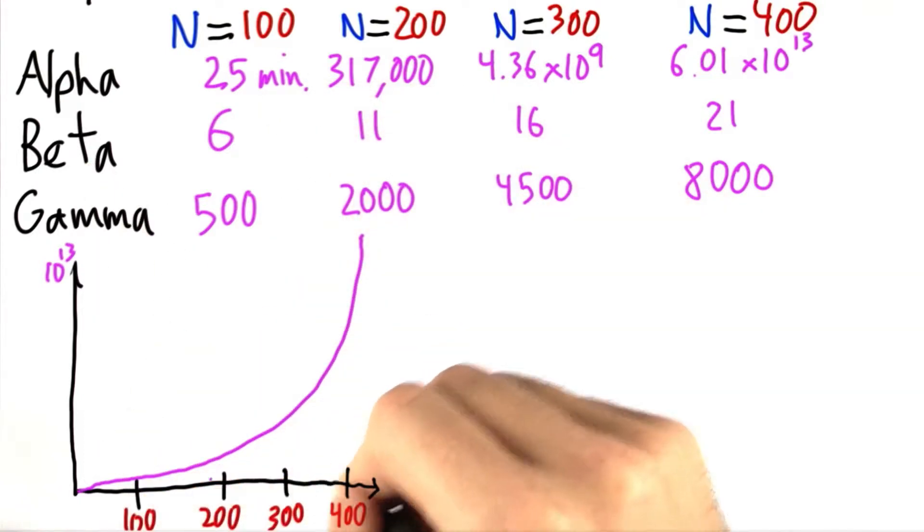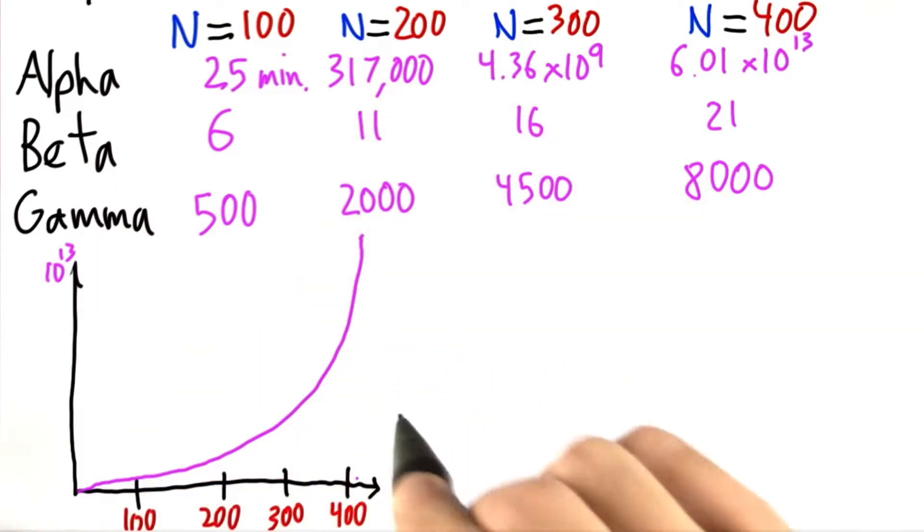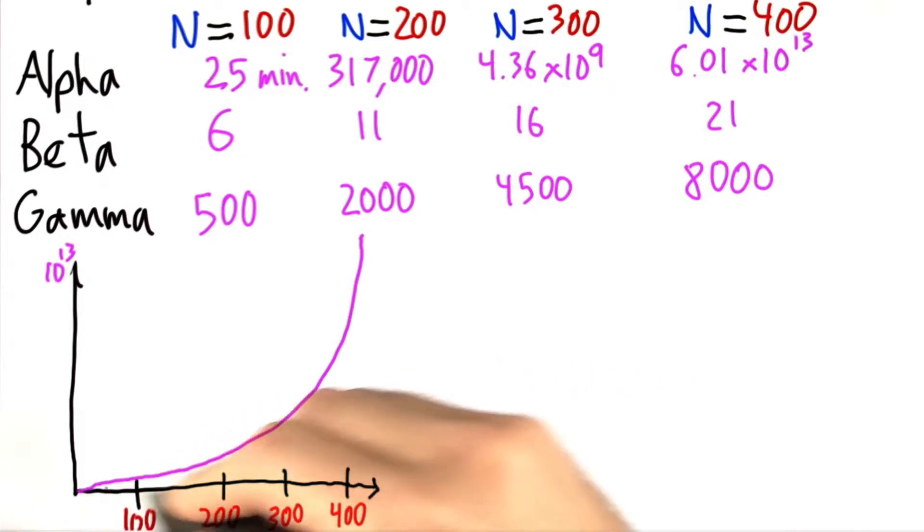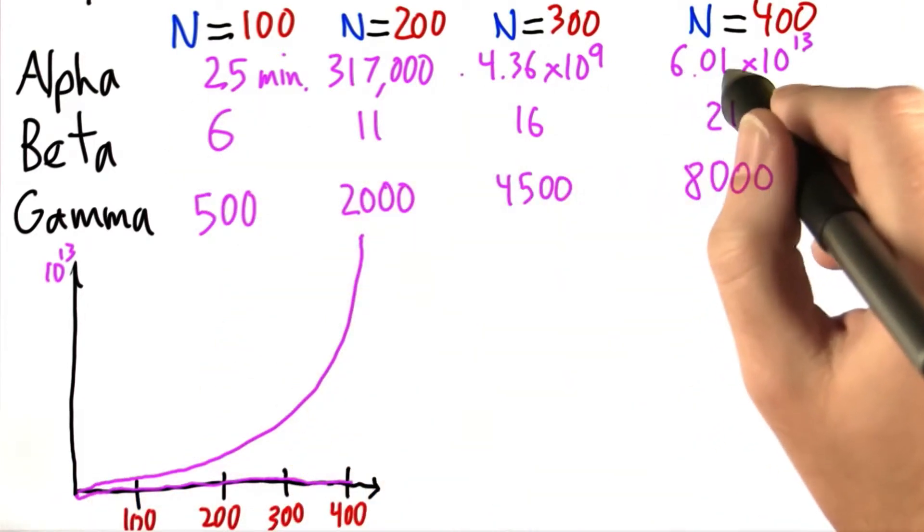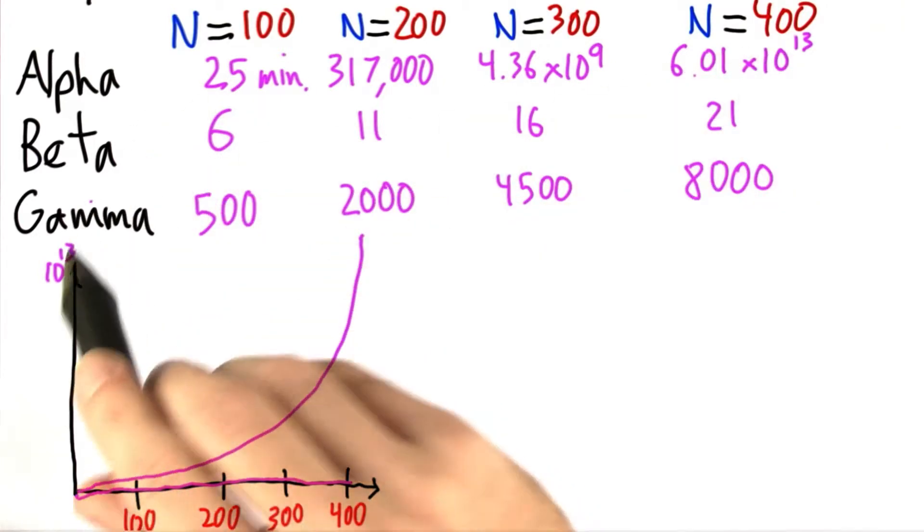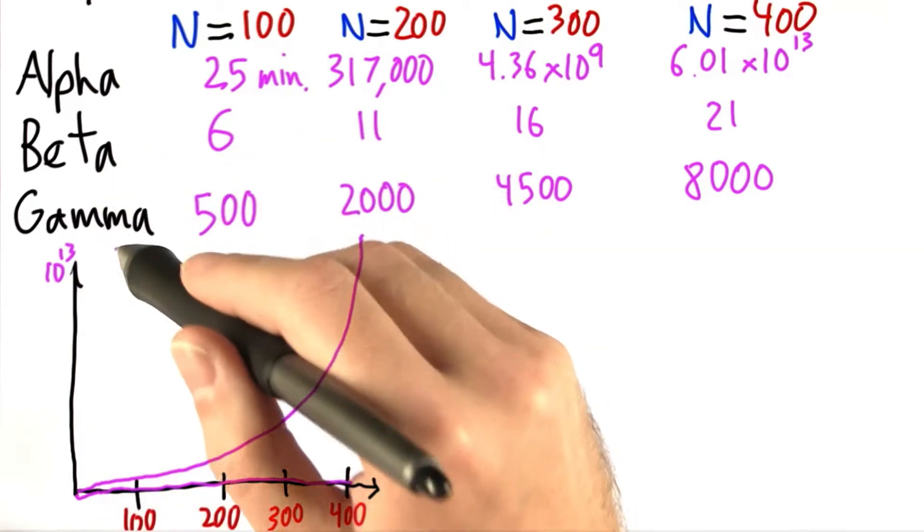For beta and gamma, we really just can't see them on this graph. They're so close to the x-axis here that they might as well just be right on top of it. So that doesn't really help us. So clearly alpha is growing just unbelievably faster than both beta and gamma.